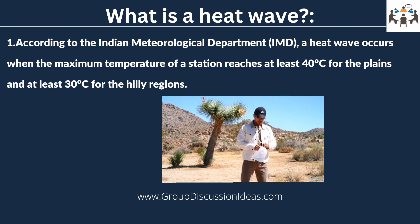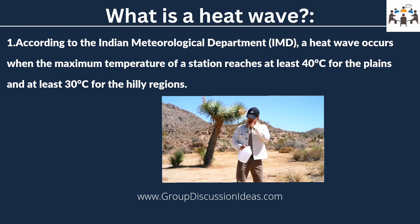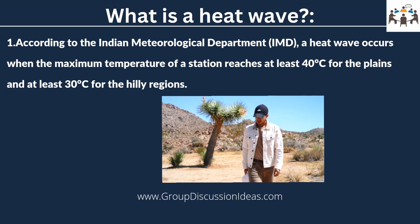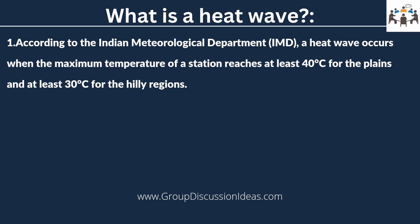What is a heat wave? A heat wave is a prolonged duration of extreme heat. According to the Indian Meteorological Department (IMD), a heat wave occurs when the maximum temperature of a station reaches at least 40 degrees Celsius for the plains and at least 30 degrees Celsius for hilly regions. Heat waves are declared when there is an increase of 5 to 6 degrees Celsius from the normal temperature, and severe heat wave conditions occur when there is an increase of 7 degrees Celsius or more.